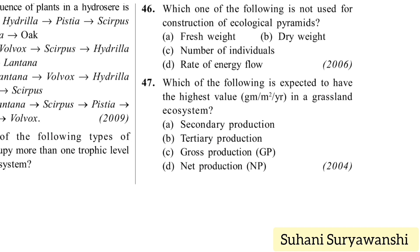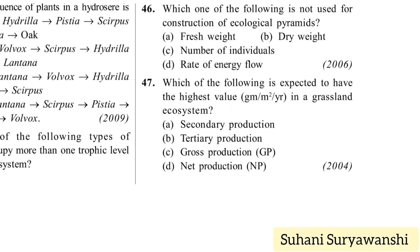Which of the following is expected to have the highest value in grams per meter squared per year in a grassland ecosystem? Options: secondary production, tertiary production, gross production, or net production. Gross production minus respiratory losses gives net production, so gross is higher. Producers produce the most, so the answer is option C — gross production.